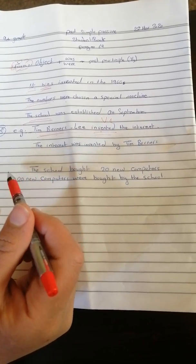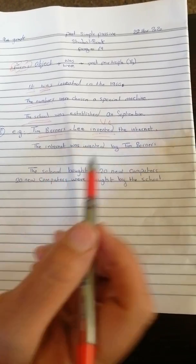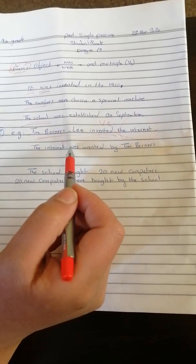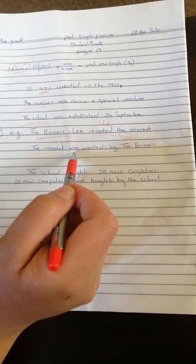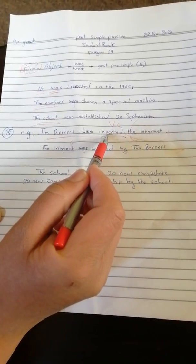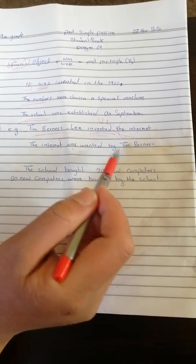We have to find the object. The internet is the object. Put it up first. Then, the internet is singular, it took was. Invented is verb 2, the verb 3 of it is invented too, by Tim Berners Lee, or you can omit this.